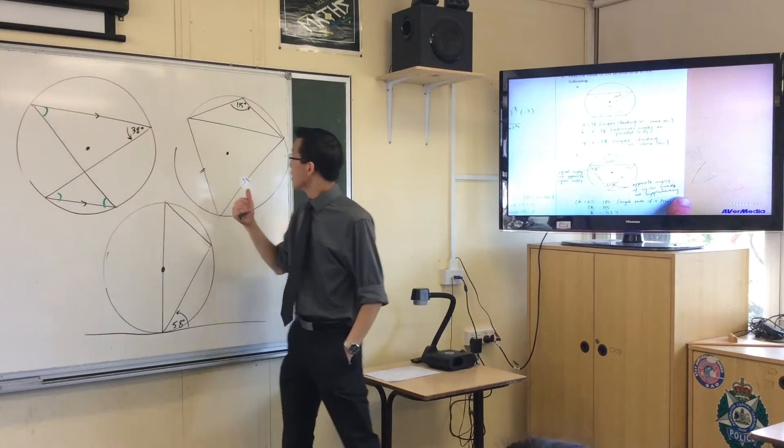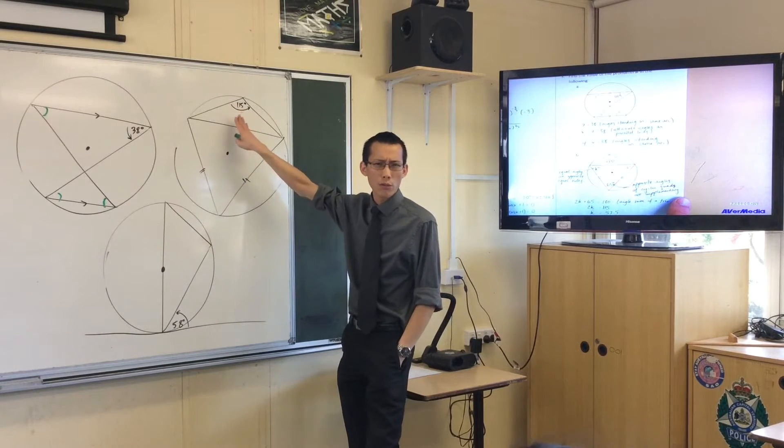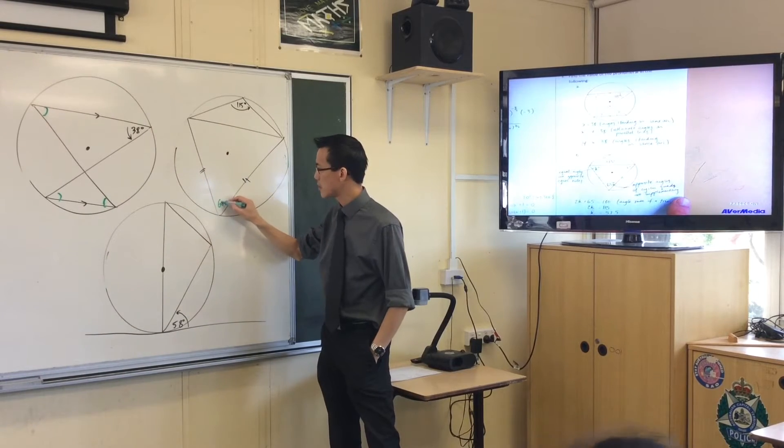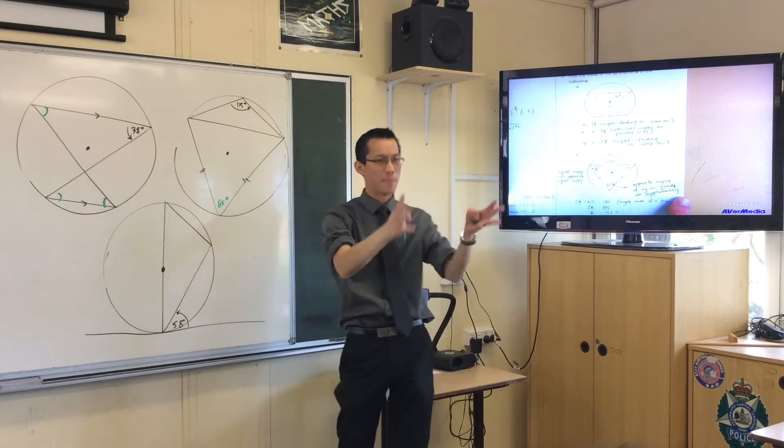Part B. Here we go. I've got 115 degrees up in the top. What can I do with that 150 degrees? Yeah, over here on the opposite corner, that's got to be 65 because opposite angles in a cyclic quadrilateral are supplementary.